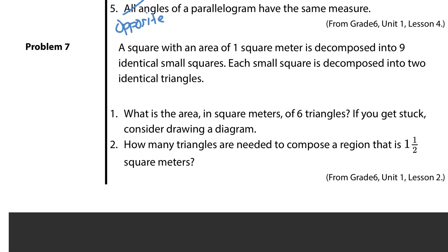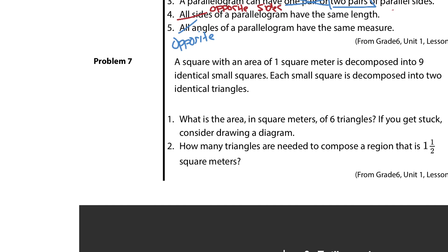Now, our last question, question 7. A bit of a challenge. A square with an area of 1 square meter is decomposed into 9 identical small squares. Each small square is decomposed into 2 identical triangles. Now, before we even get into this here, it does say, if you get stuck, consider drawing a diagram. Let's draw a diagram. Let's draw a square. Let's break it into 9 identical small squares. Let's break the small squares into triangles and see what we can do with this. Now, here's our big square. And, if we divide this now, 3 lines, or 2 lines going across and 2 lines coming up and down will give me pretty much, and you can kind of squint, 9 identical squares.